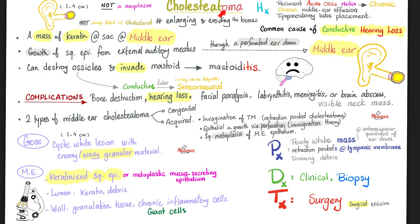What's dangerous about cholesteatoma is that it keeps getting bigger and can erode into bones. Initially it causes conductive hearing loss, but as it erodes into the labyrinth — the inner ear — it can cause sensorineural hearing loss. It can also erode near the facial nerve at the stylomastoid foramen causing facial paralysis or ipsilateral Bell's palsy, and even cause a brain abscess. Microscopically, you see keratinized squamous epithelium or metaplastic mucus-secreting epithelium, granulation tissue, and giant cells.